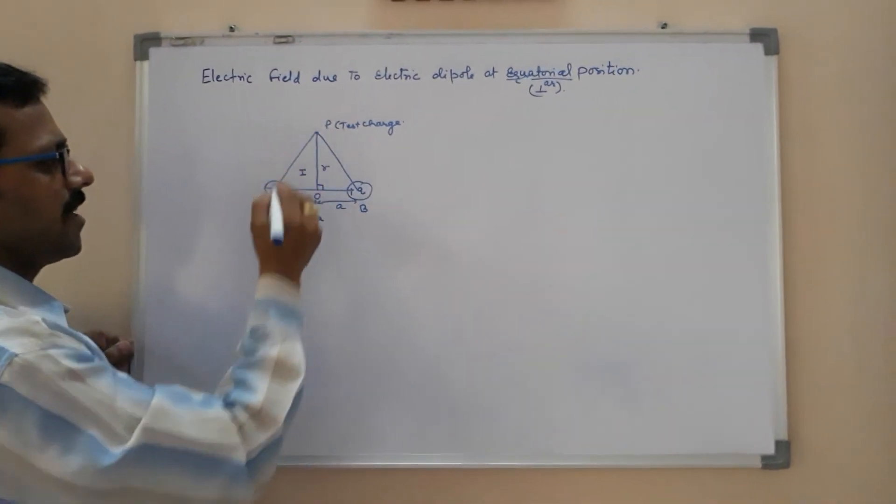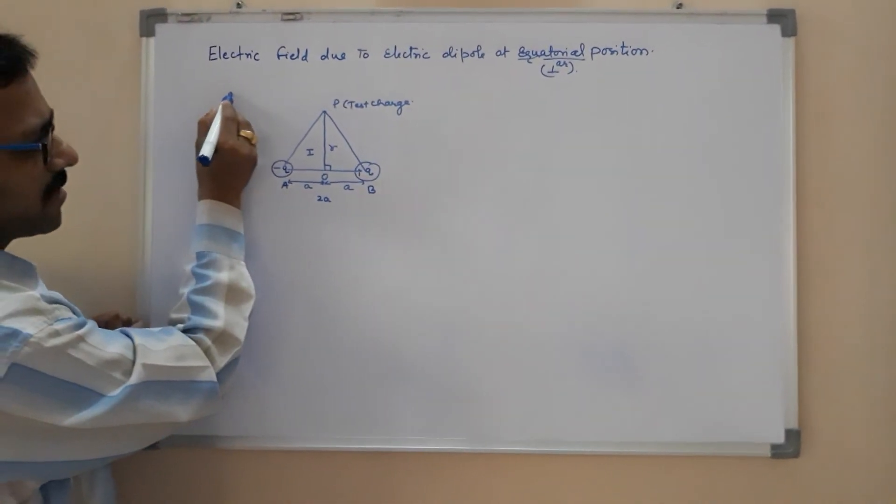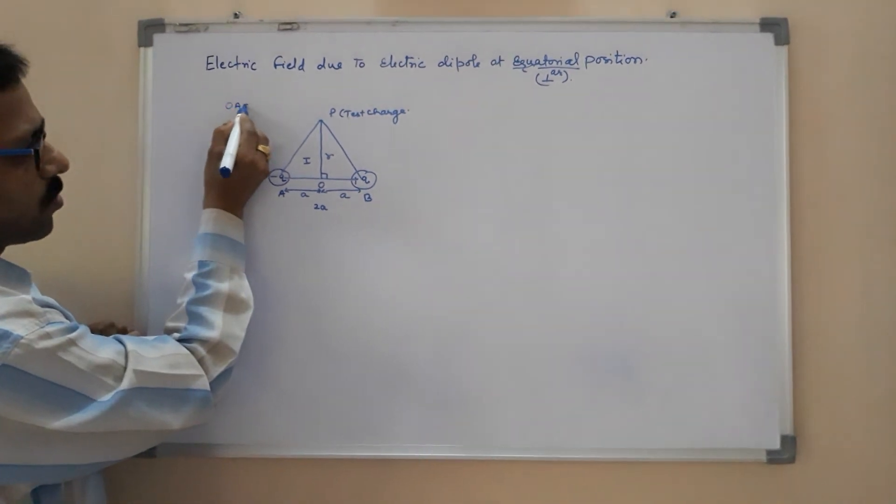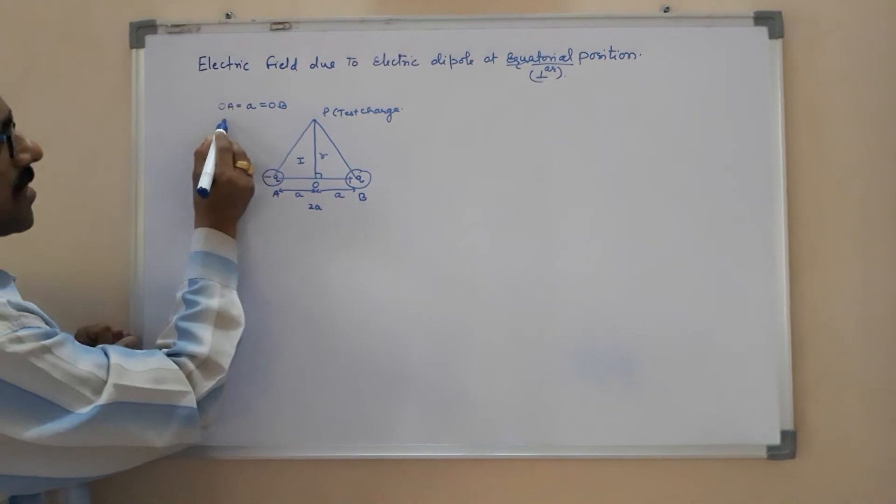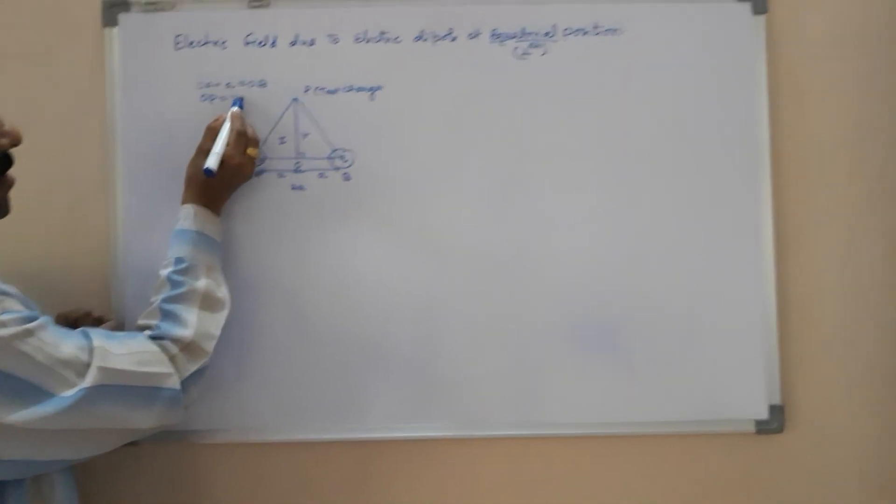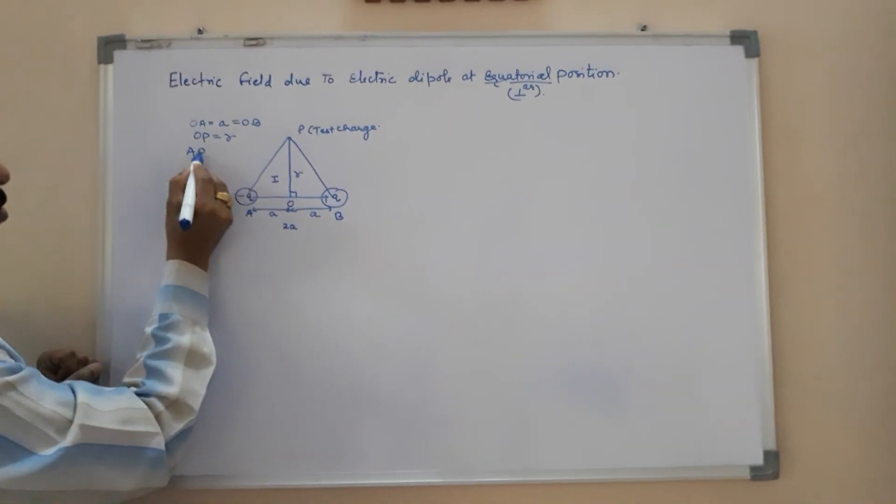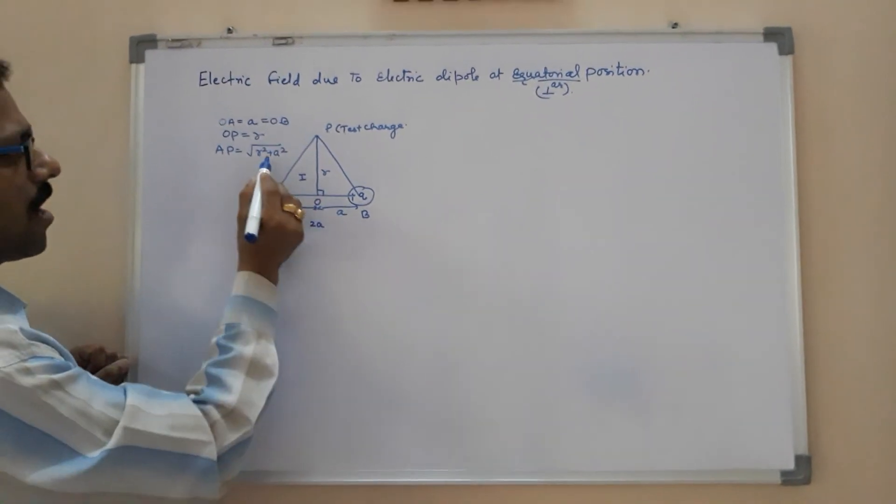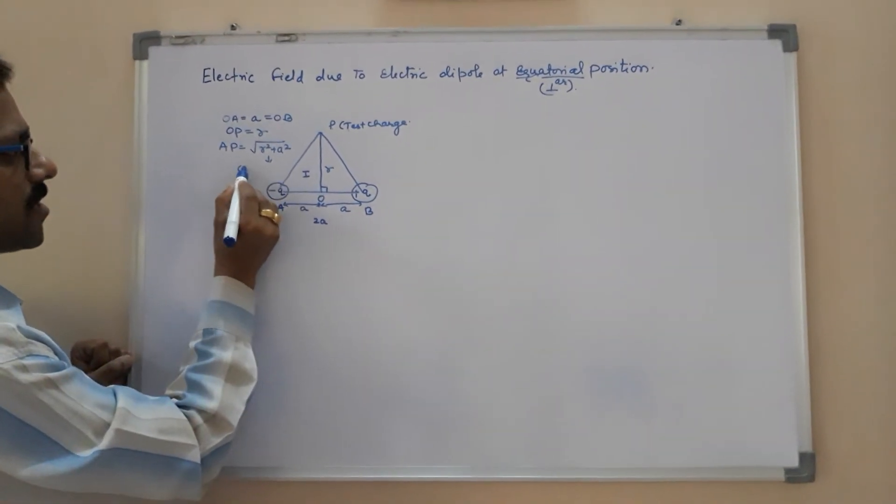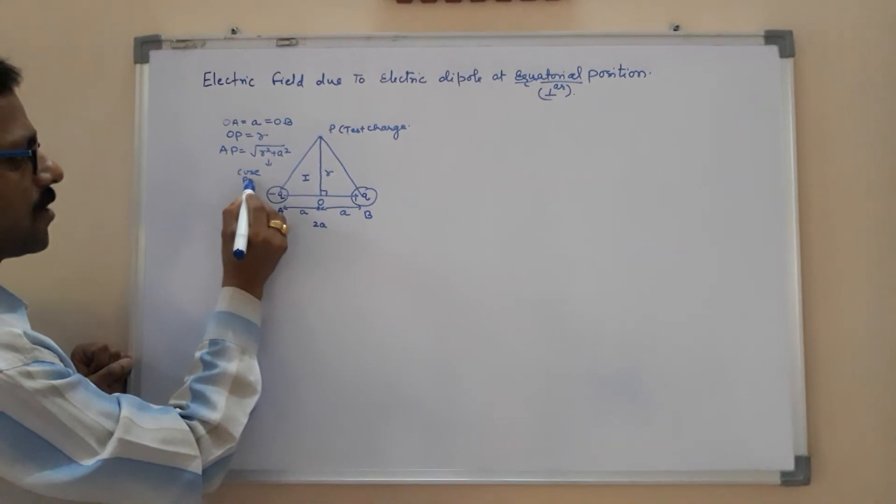From here you will get it: AO equals A, which equals OB, whereas OP equals R, and AP equals under root R squared plus A squared. How? By using the Pythagoras theorem.